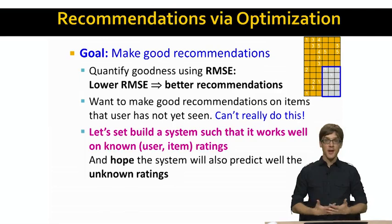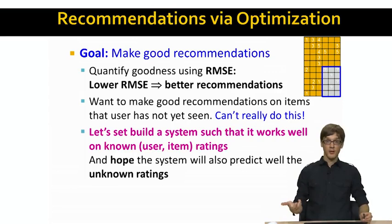The global idea or the goal is that we want to make good recommendations. The way we talked about the goodness of recommendations was using the root mean squared error. The idea is: the smaller the root mean squared error of our recommender system, the better the recommendations.